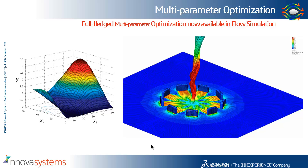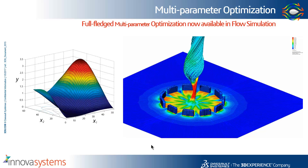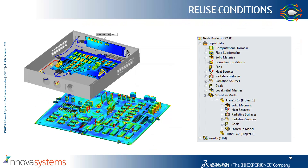In previous releases we would have only been able to define a single variable, which means that it would have required three separate optimization studies to achieve the same result.